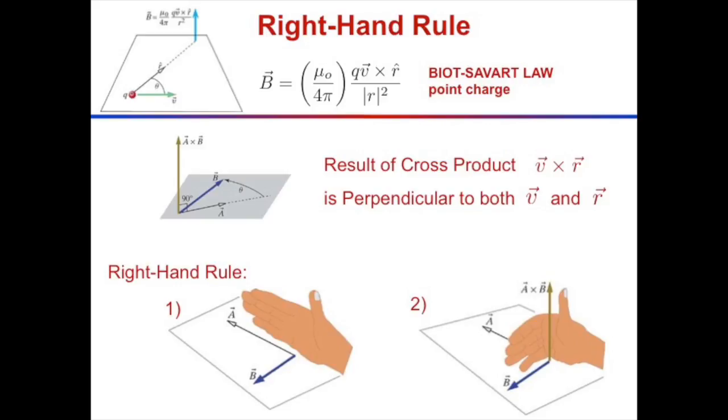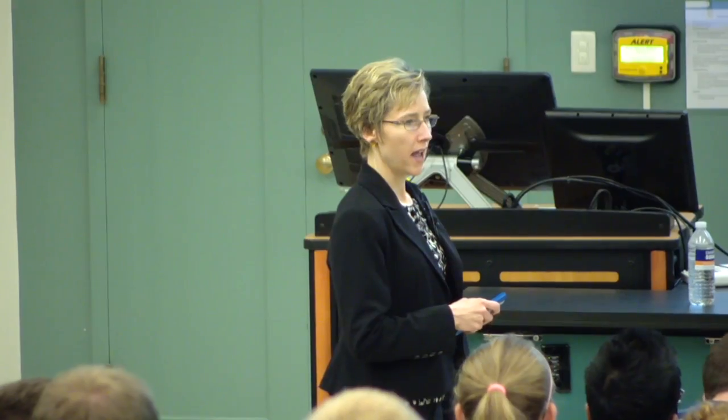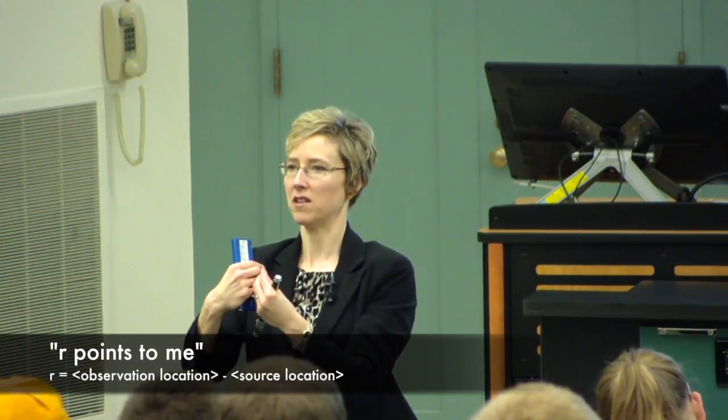V is the velocity of the particle relative to some observation point, and r is a vector that goes from the charged particle to the observation point. The way to remember which way r points is: r points to me. If I want to know the magnetic field at a particular observation point, I imagine myself standing there, and r points from the charged particle to me.